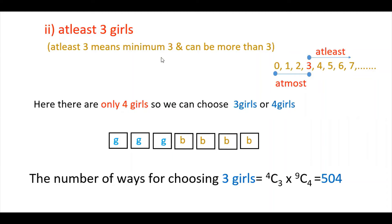This is the second case. In this case, you have to find the number of ways where at least 3 girls are in the committee. At least 3 girls means there should be a minimum of 3 girls or more than 3 — that is 4, 5, 6, 7, etc. At most means maximum 3 girls — either 0, 1, 2, or maximum 3. This is the difference between at least and at most. Here, at least 3 girls and there are only 4 girls total, so there are 2 cases: either you choose 3 girls or 4 girls.